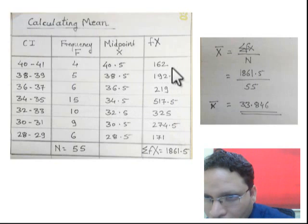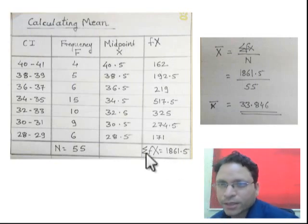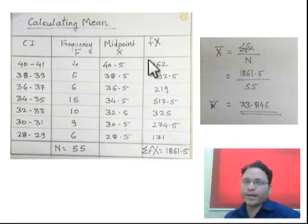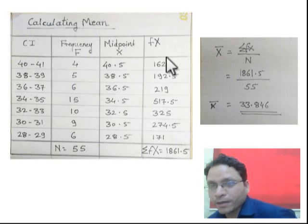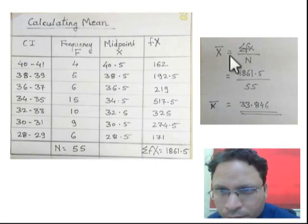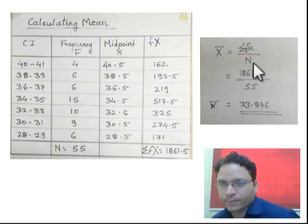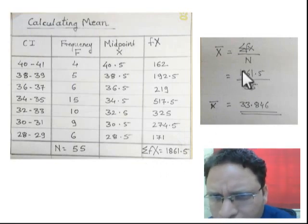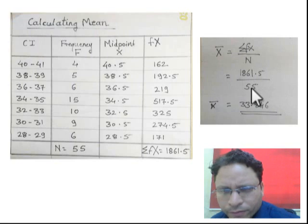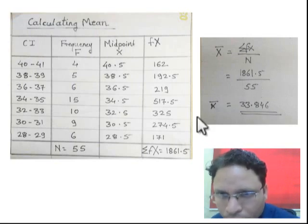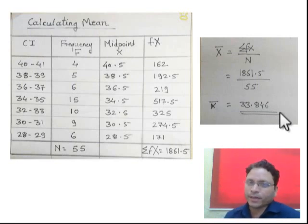Now what you have to make? You have to add all these values together, it is called summation fx. If you do addition of all these values, you will get this value called summation fx. Now we have made midpoint and then we have made fx. What is the formula of calculating mean when data is given in group form? Simple formula is x̄ = Σfx/n. Summation fx we have got here, divided by n, we already calculated here it is 55. So when we do this sum and calculate this division, you get this value, that is 33.846. So this way we can calculate mean. Thank you.